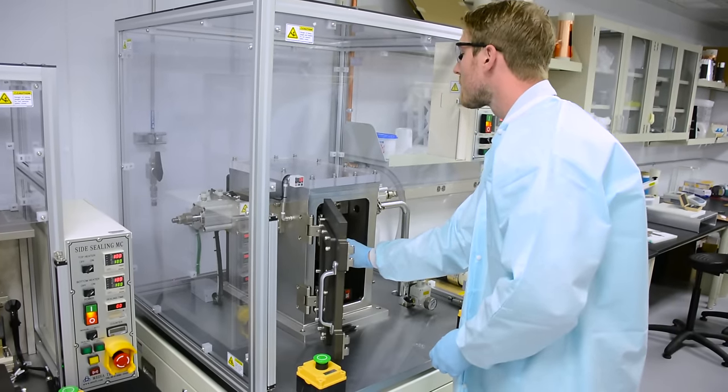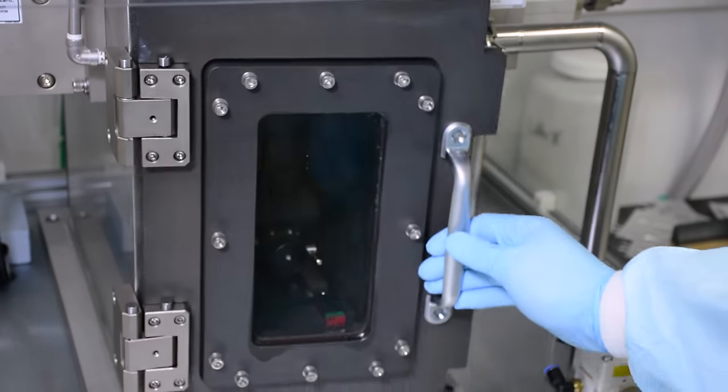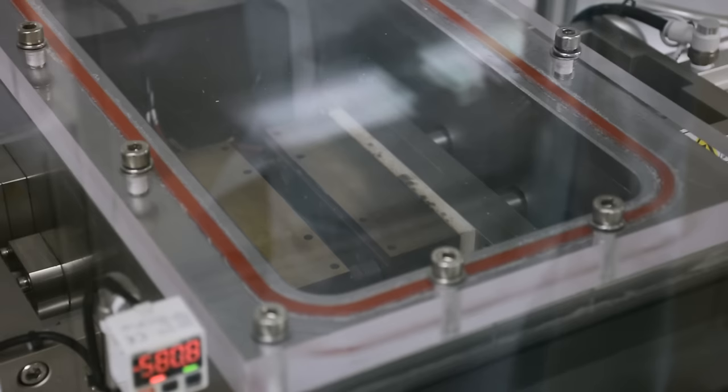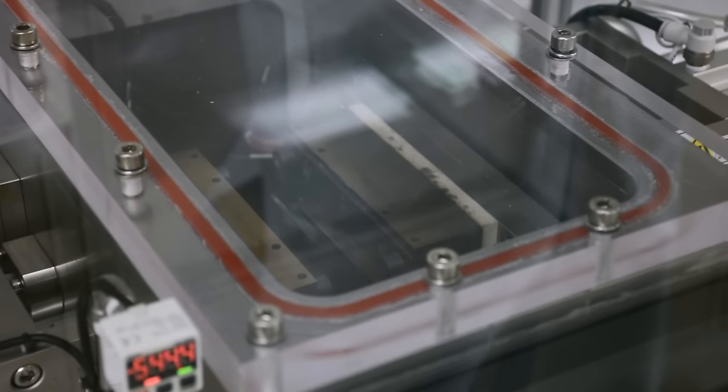Next, the battery pouch is placed in a vacuum box where all the remaining air is sucked out, allowing the electrolyte to soak into the electrodes.